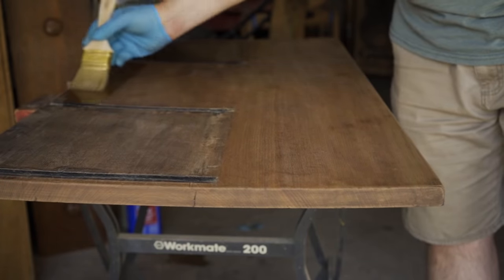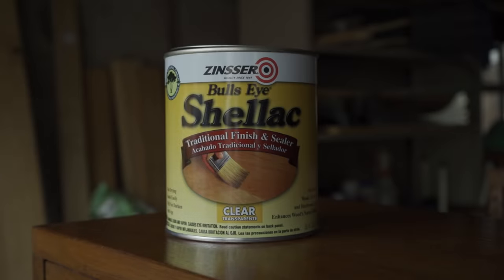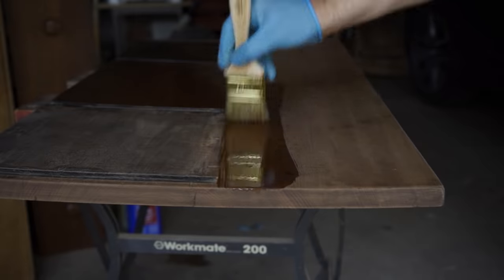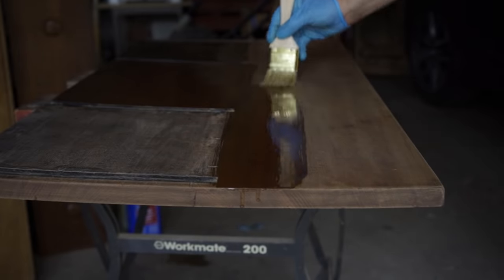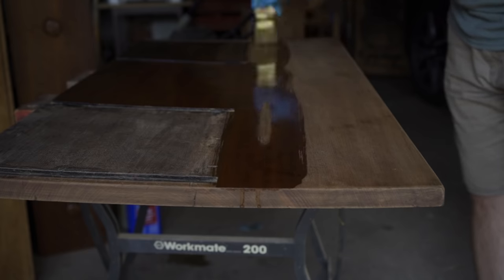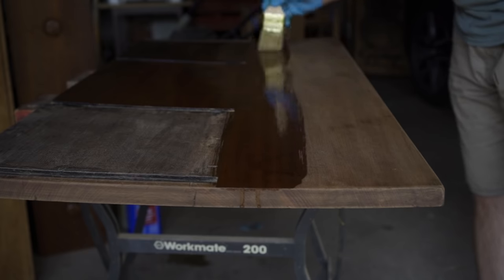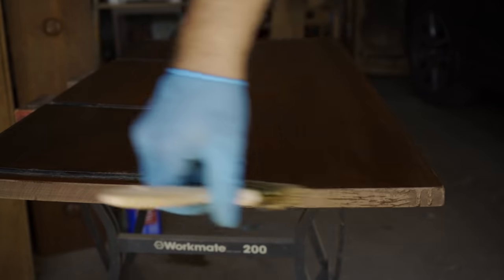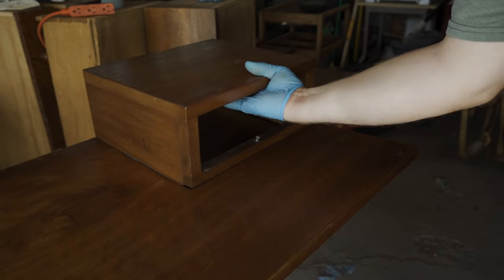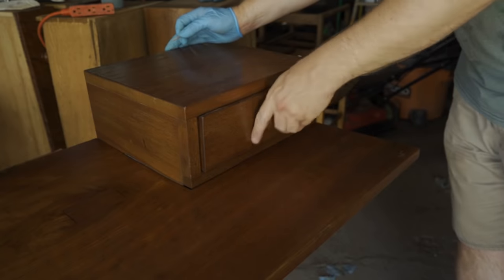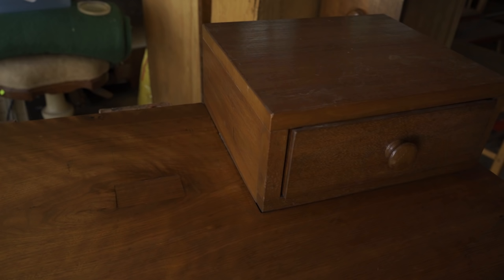Next, it was time to put on the finish. And I'm using shellac for the final finish on this, just like it was originally. I'm using shellac from a can, but I am diluting it a bit with some denatured alcohol. So it's half shellac from the can and half denatured alcohol. And this just makes it easier to work with. Here's how it looks with that little drawer box put back on the top. I think the color is a pretty good match.